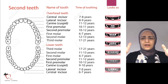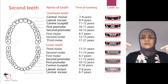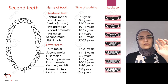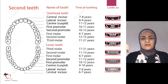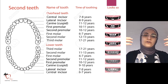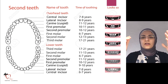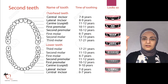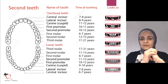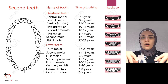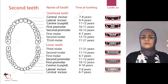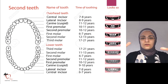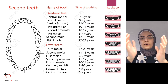To recap the eruption sequence: sixes and lower centrals around age six; lower laterals and upper centrals around seven to eight; upper laterals around eight to nine; then a pause of one to two years; then lower canines; then lower and upper first premolars — the fours — around ten to eleven. After that there is variation in which erupts first among the fives, upper canines, and sevens, followed by third molars. In ortho shorthand: three means canine, four means first premolar, five means second premolar, six means first molar, seven means second molar.